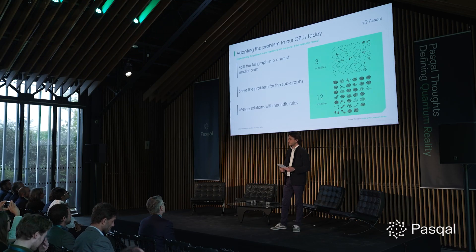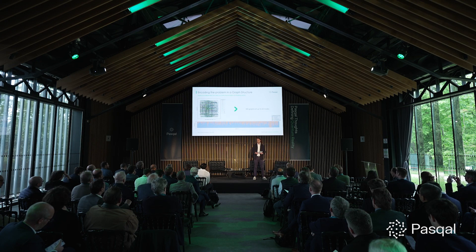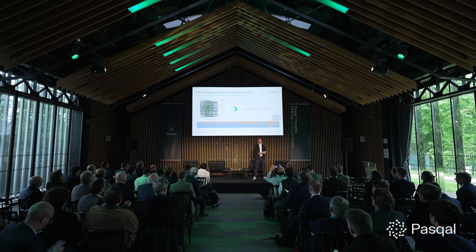Now we know how to find maximum independent sets — let's go back to our original problem. The initial graph has 400 nodes, and using our MIS solver one would need 400 qubits for the solution. Since that scale isn't available yet, our approach was to split the large graph into a set of smaller, as-independent-as-possible subgraphs, solve the MIS problem for each subgraph, and merge the solutions using heuristic rules to fix conflicts. We derived 300 smaller graphs of up to 25 nodes and used our MIS solver to find maximum independent sets for each.